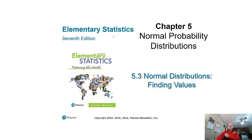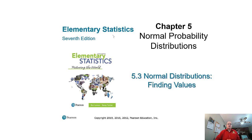Welcome back to normal distributions. This time we're going to go in the opposite direction — finding values. In other words, we're going to start with probabilities and get the values. In the previous section we took the values and found probabilities associated with certain areas. This time we're going in reverse and we're going to go to a different place on our calculators. So hold on to your hats.